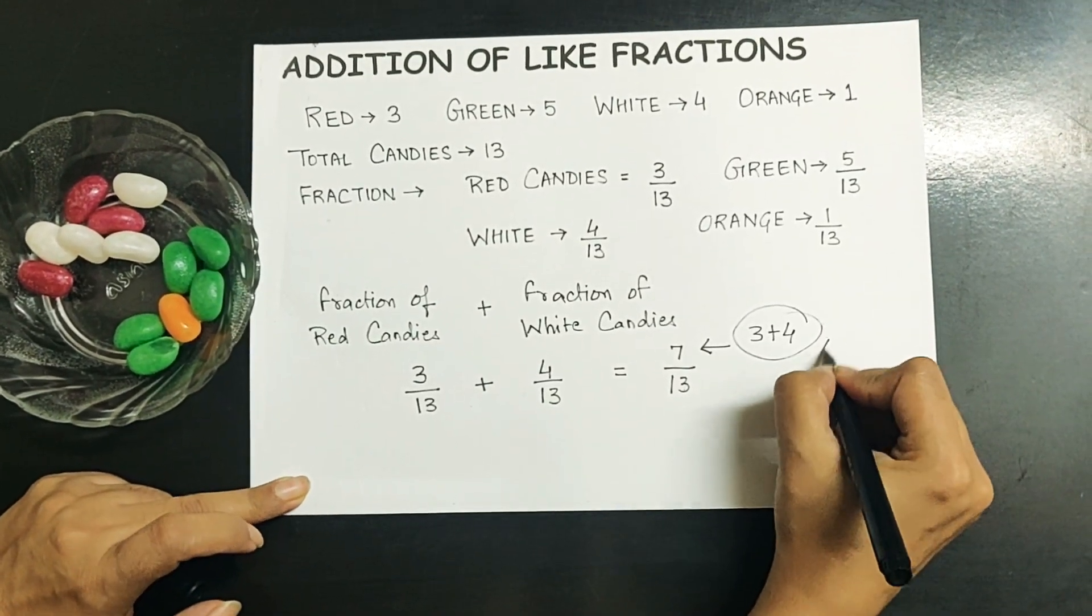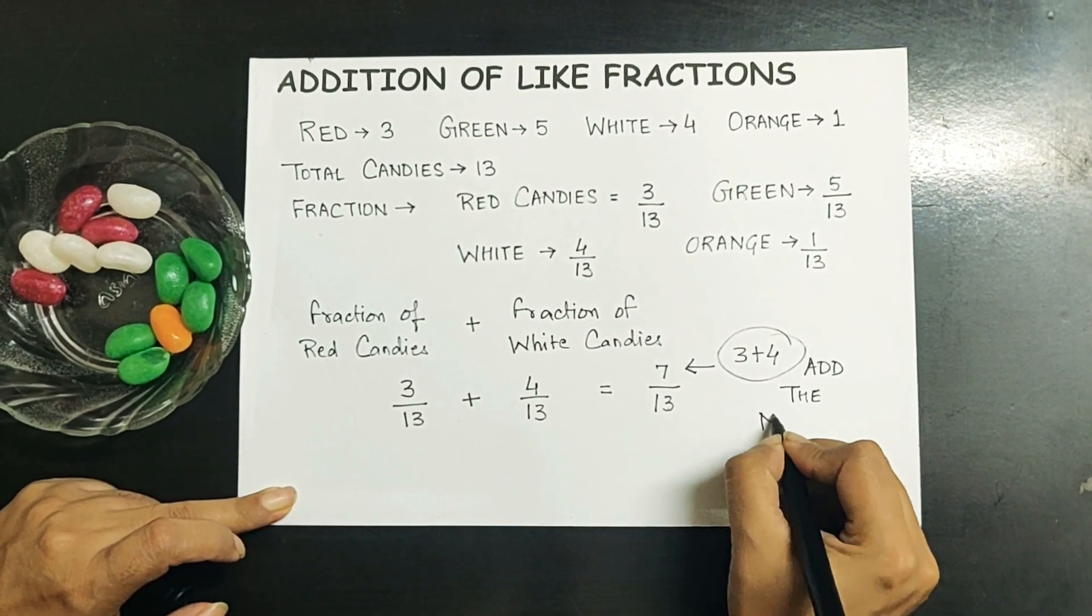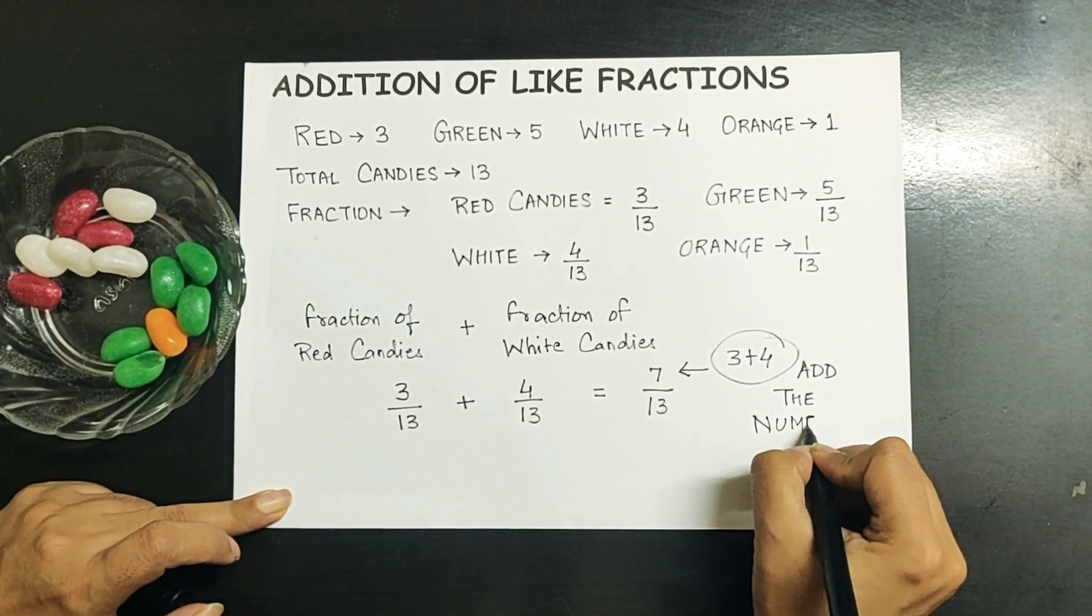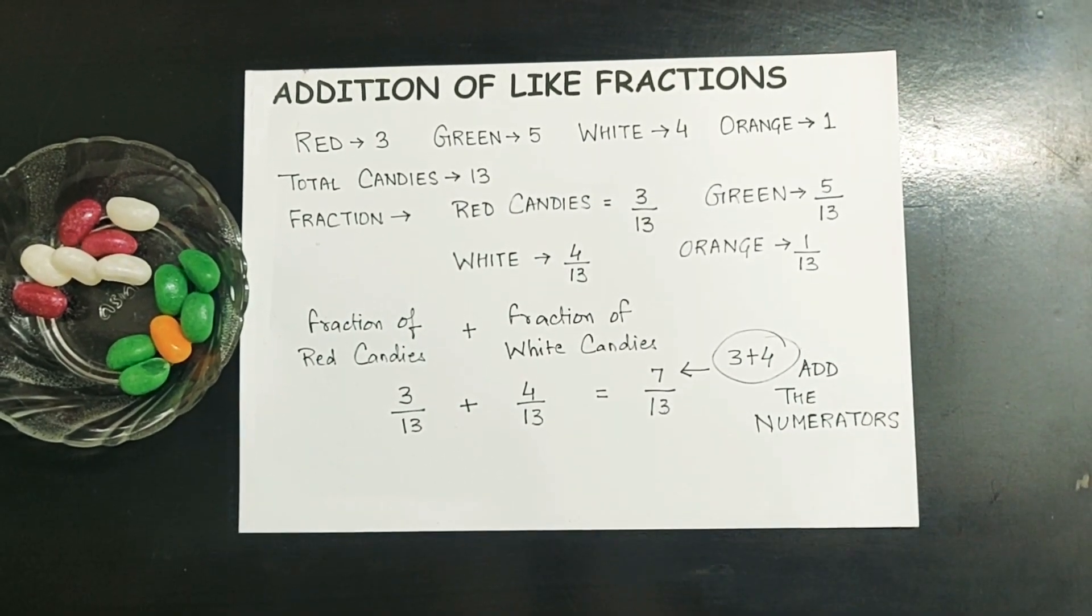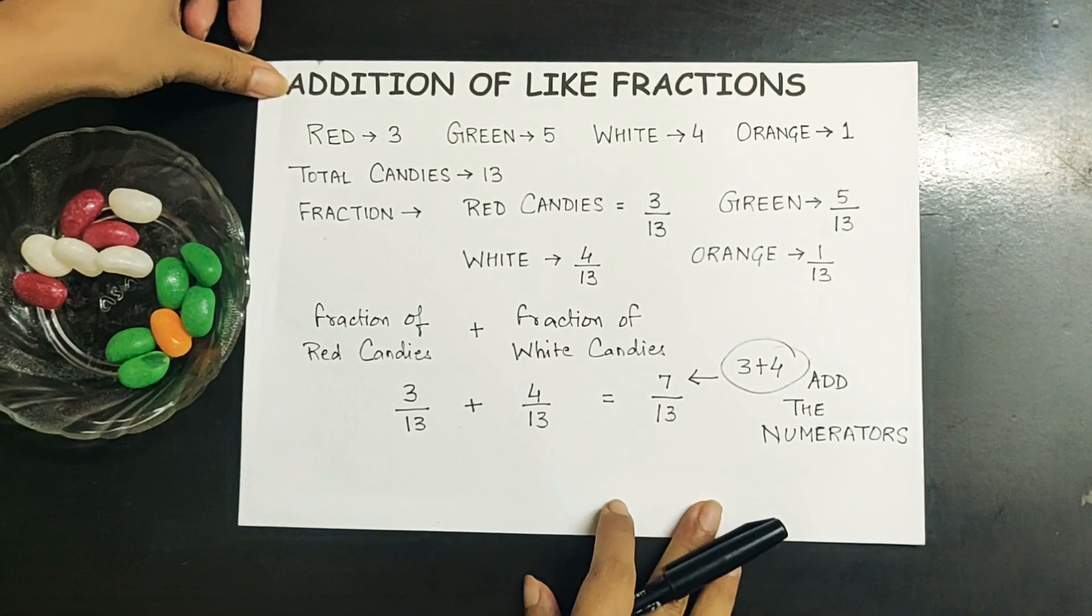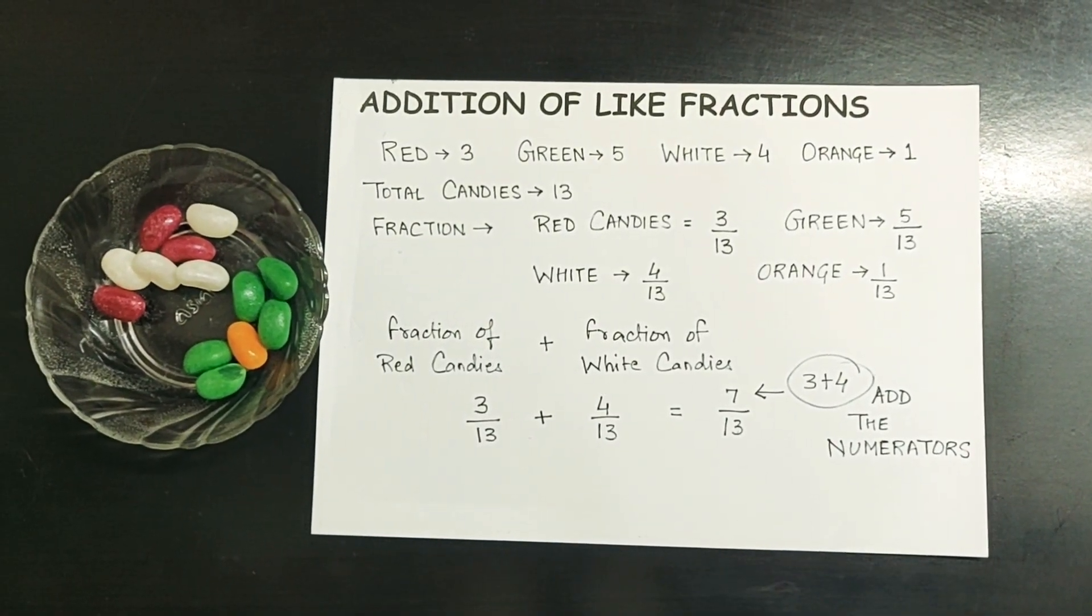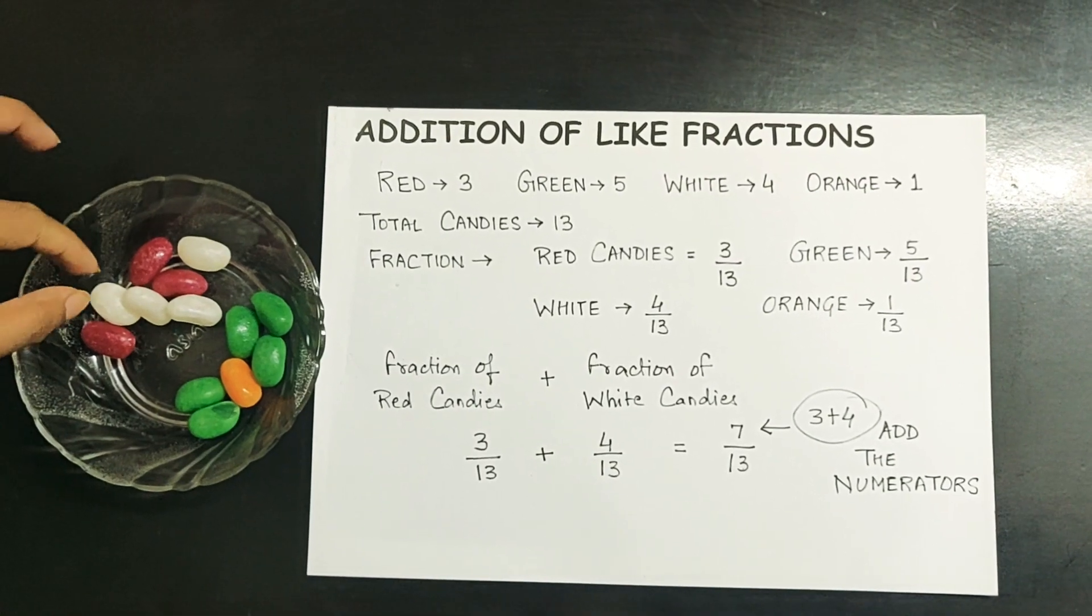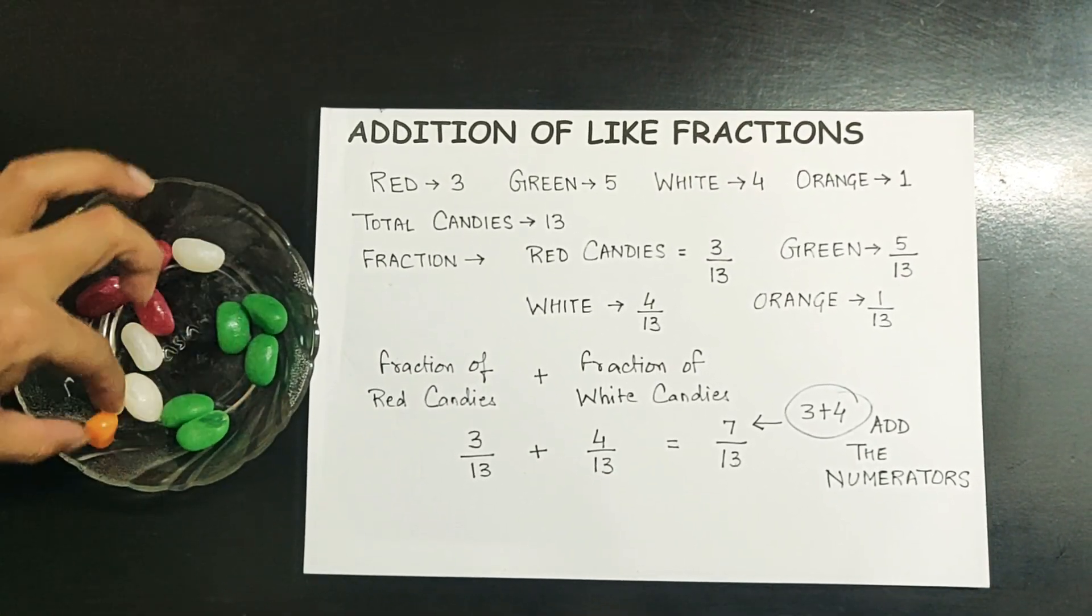What did we do? We added the numerators. This is a simple common rule that we apply in the addition of like fractions. We add the numerators keeping the denominator same. Now we can easily find out the fraction for a different combination. Let's find out the combination for white and orange.